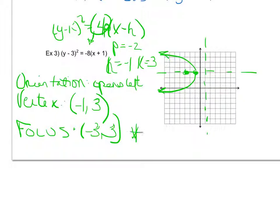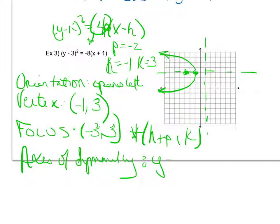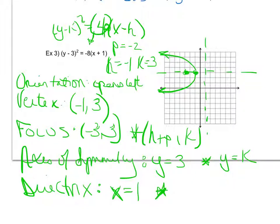Or, if it opens left or right, I can use the formula, (h + p, k). And then I have to find my axis of symmetry. So I can see it is a horizontal line that all have the same y value. They all have a y value of 3. I could also have used the formula y equals k. And then, finally, I write my directrix out. I can see it's a vertical line passing through x equals 1. In fact, all of them are x equals 1, so I'm going to go ahead and use the equation x equals 1, which is the formula y equals h minus p.